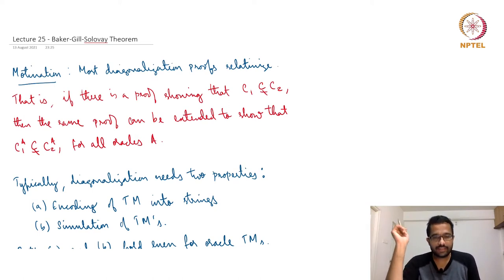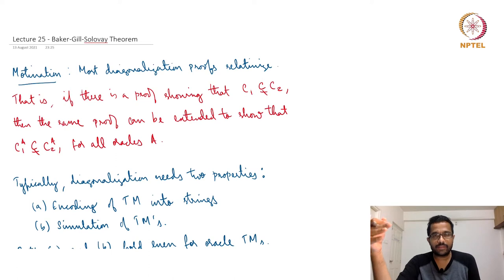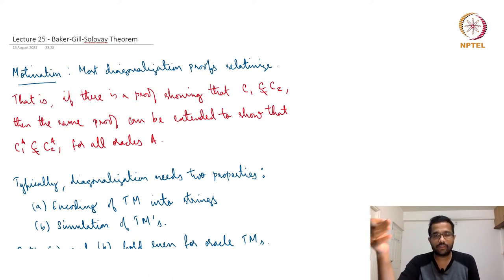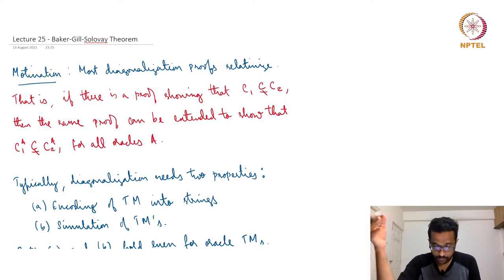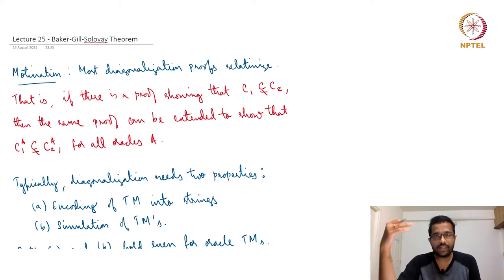We have seen the time hierarchy theorem, space hierarchy theorem, and the undecidability of the halting problem — all of these were proved using diagonalization. And most diagonalization proofs relativize.